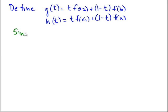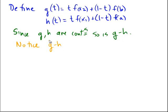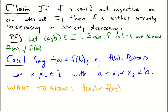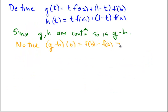Okay, so since these are continuous, since g and h are continuous, so is g-h, because the difference of two continuous functions is continuous. And notice, what is (g-h) evaluated at 0? Well, (g-h)(0) is equal to g(0), which would be f(b), minus h(0), and h(0) would be f(a). So it's f(b) - f(a). Notice that f(b) - f(a) is bigger than 0. So this right here is larger than 0.